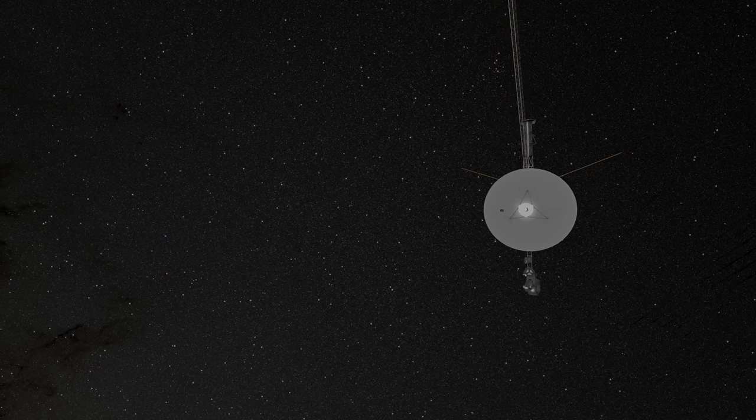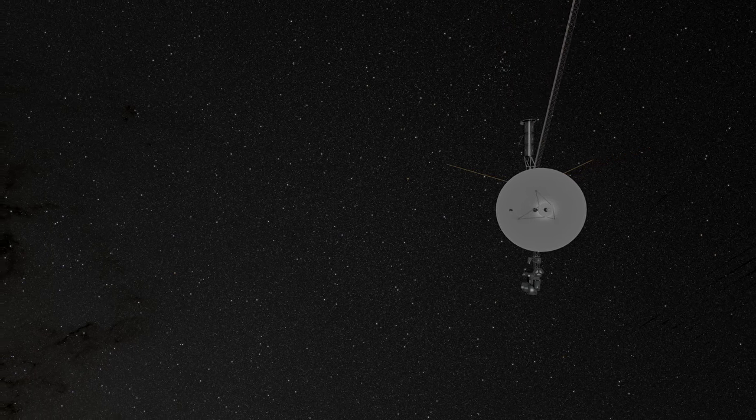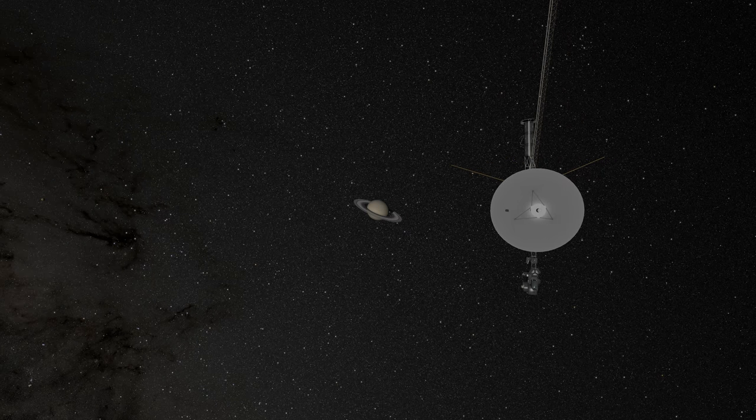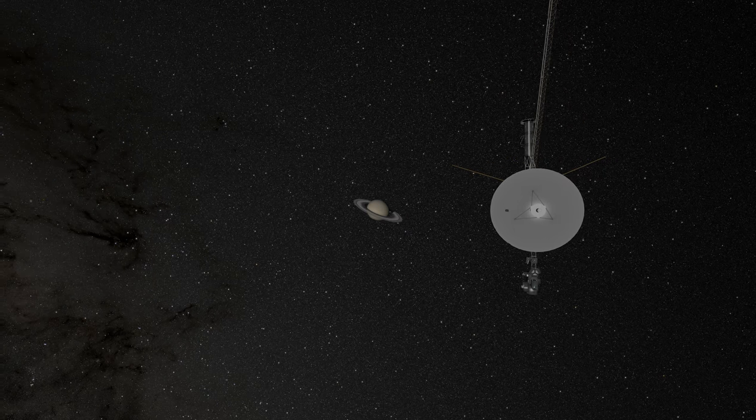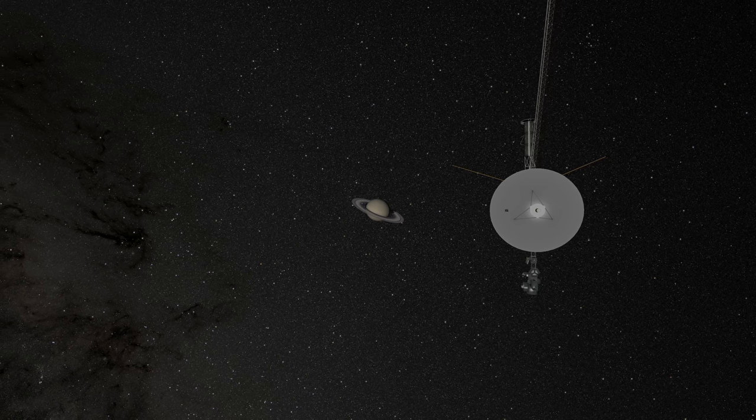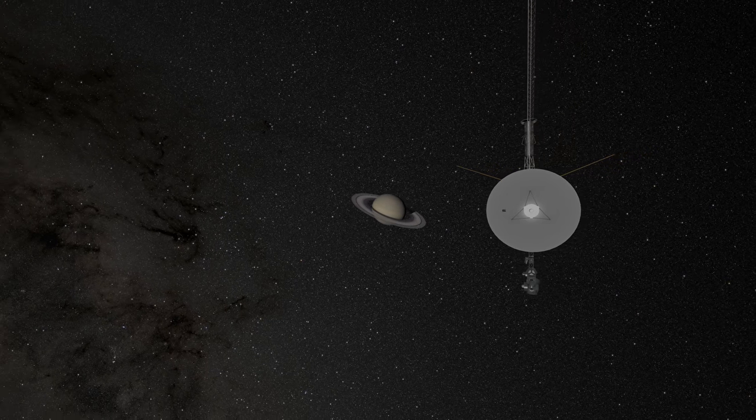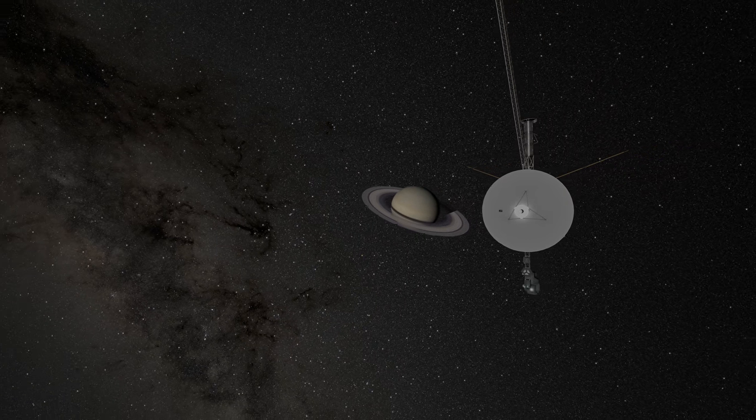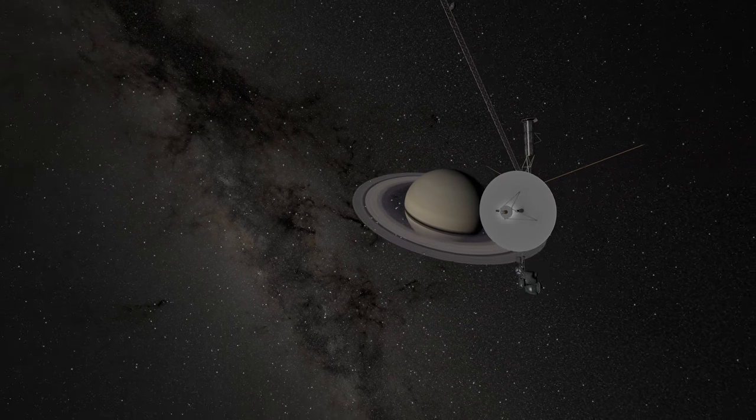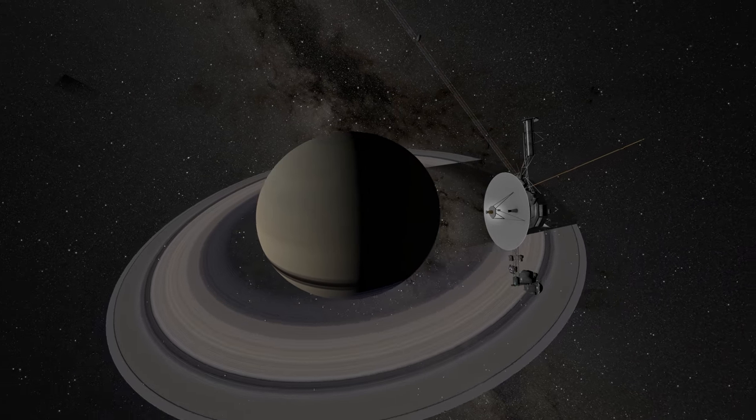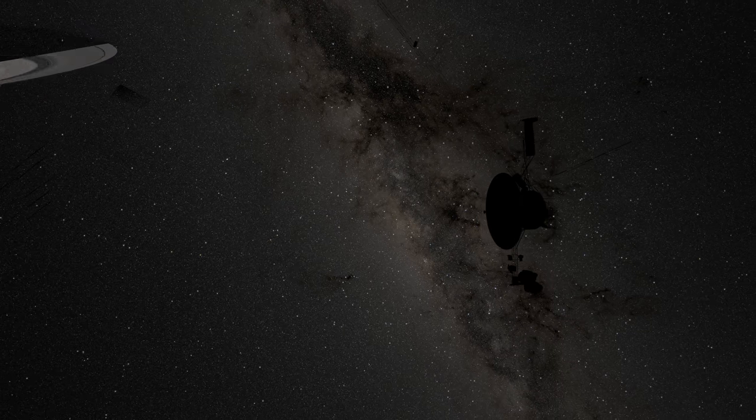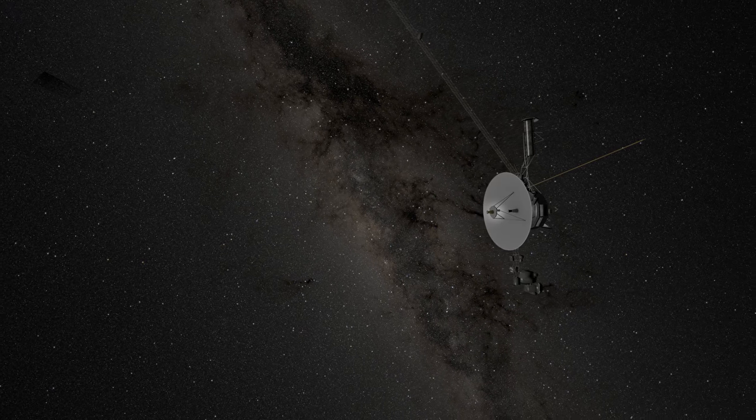In August 1981, Voyager 2 made its closest approach to Saturn and took detailed pictures of Saturn's rings. At 1.5 billion kilometers away from the Sun, that's twice the distance of Jupiter, or ten times that of the Earth. Light from the Sun is 1 hour and 23 minutes old by the time it reaches Saturn.